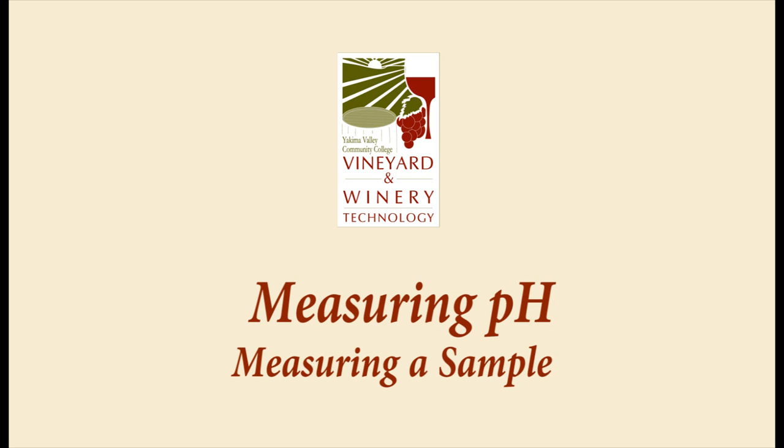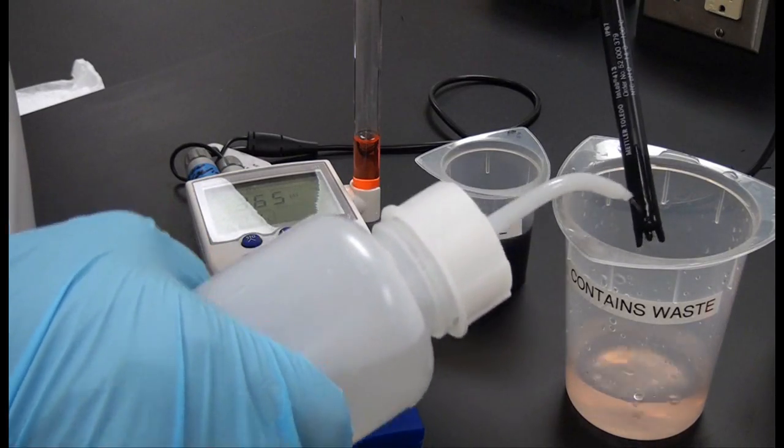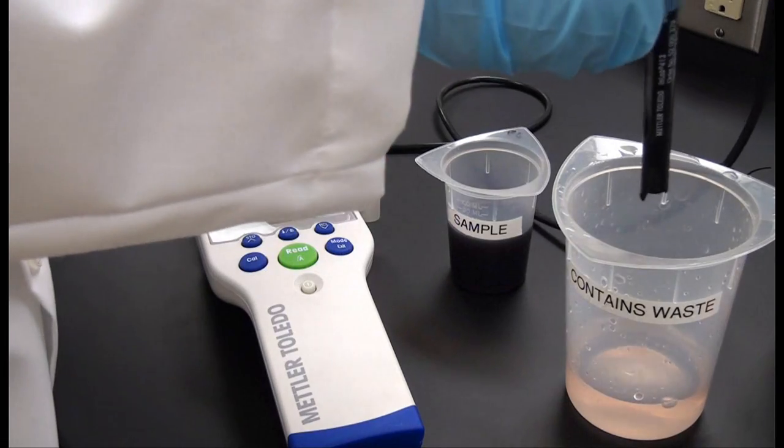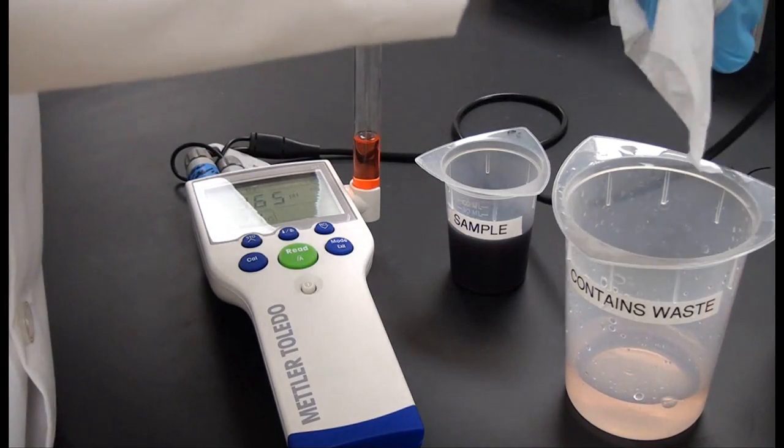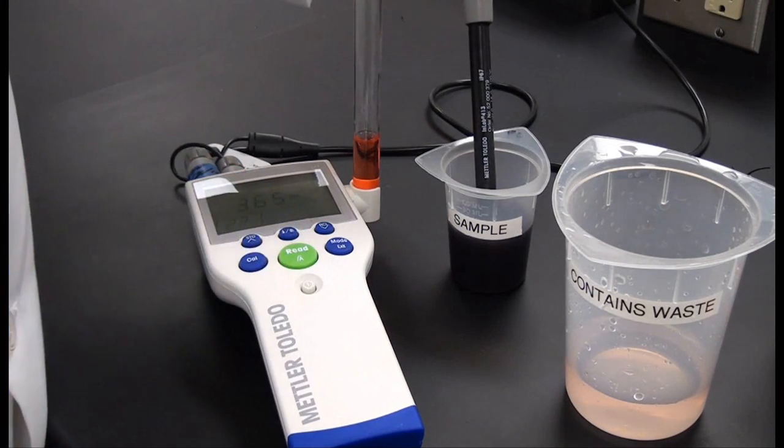Now let's take a look at pH sample measurements. Rinse the electrode with DI water prior to placing it into the sample. Place the electrode in the sample and press the read button to start the measurement. The decimal point will begin to blink. The display will begin to show the pH of the sample.